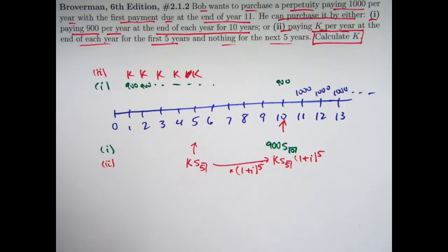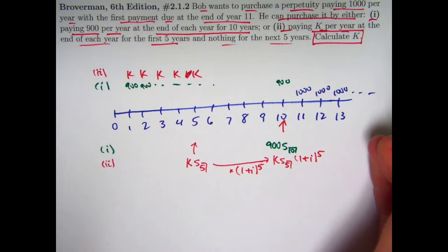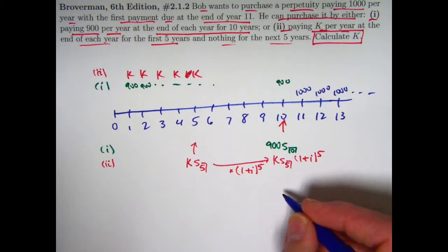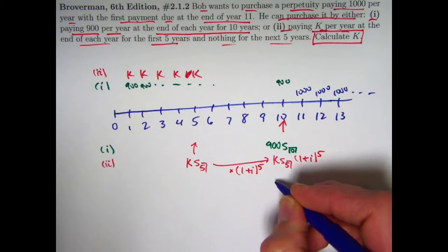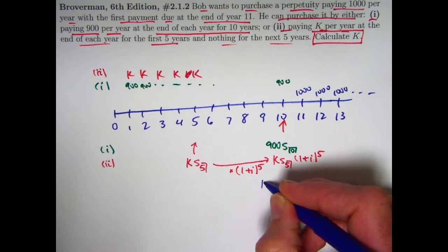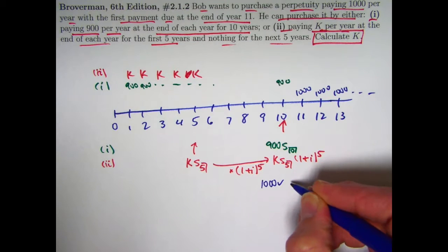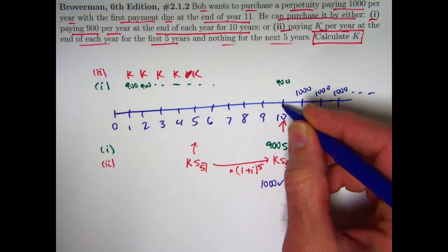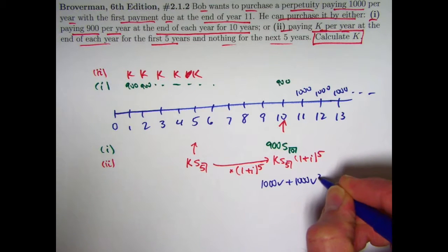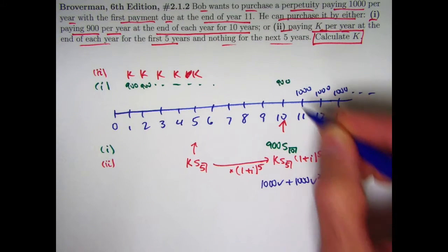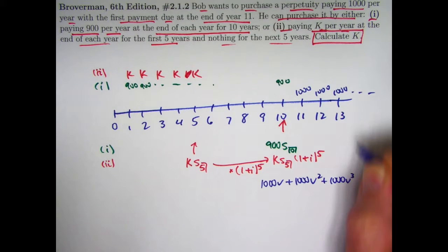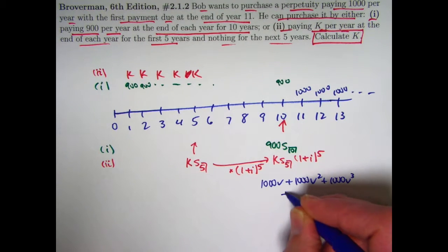What about the perpetuity? I want to find really the present value of all those quantities at time 10. Evidently, in terms of the discount factor v, it's going to be 1000v, because that 1000 is going to get pulled back in time one year, plus 1000v squared. This 1000 is going to get pulled back in time two years, plus 1000v cubed. This 1000 gets pulled back in time three years, etc. This is an infinite series.